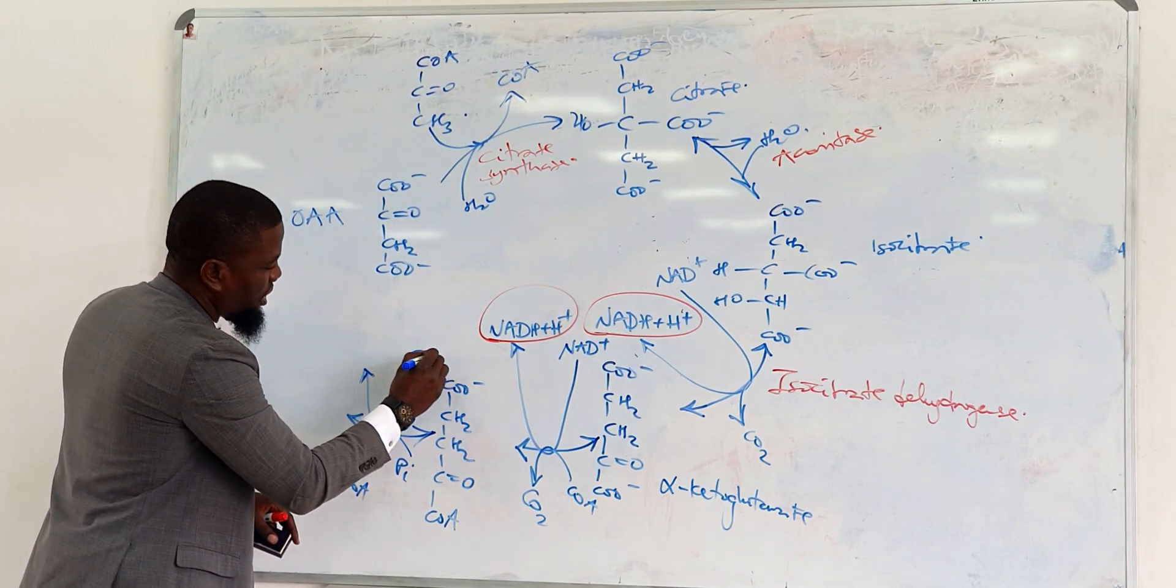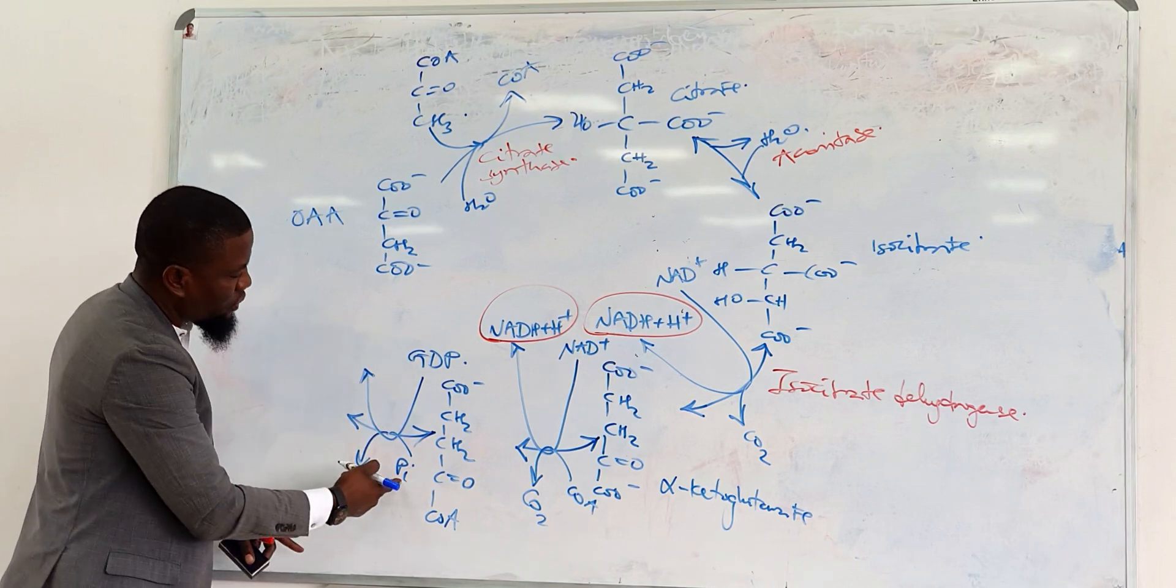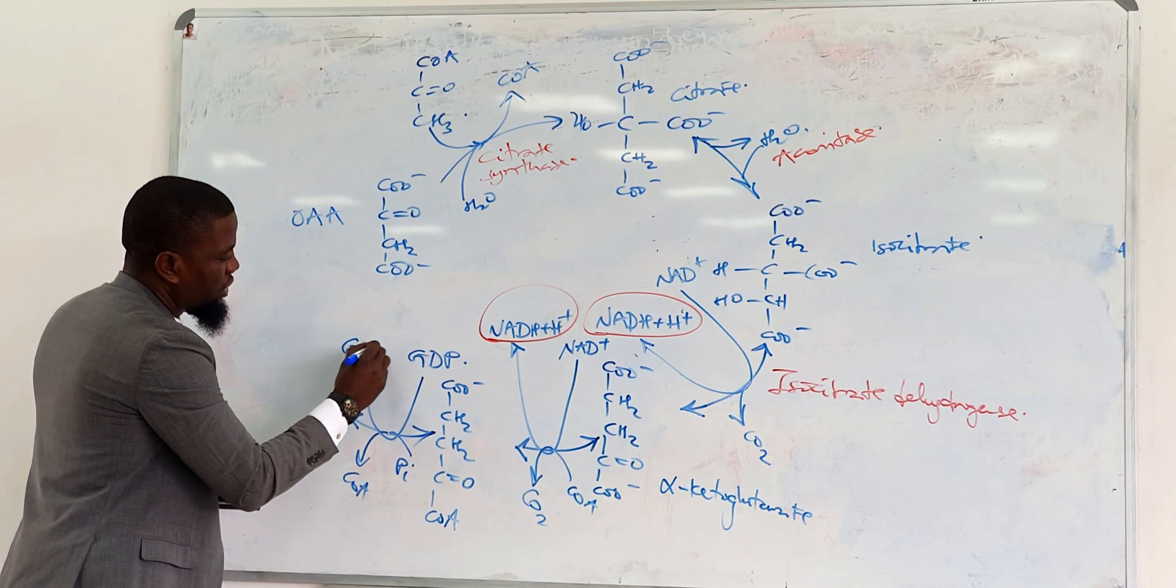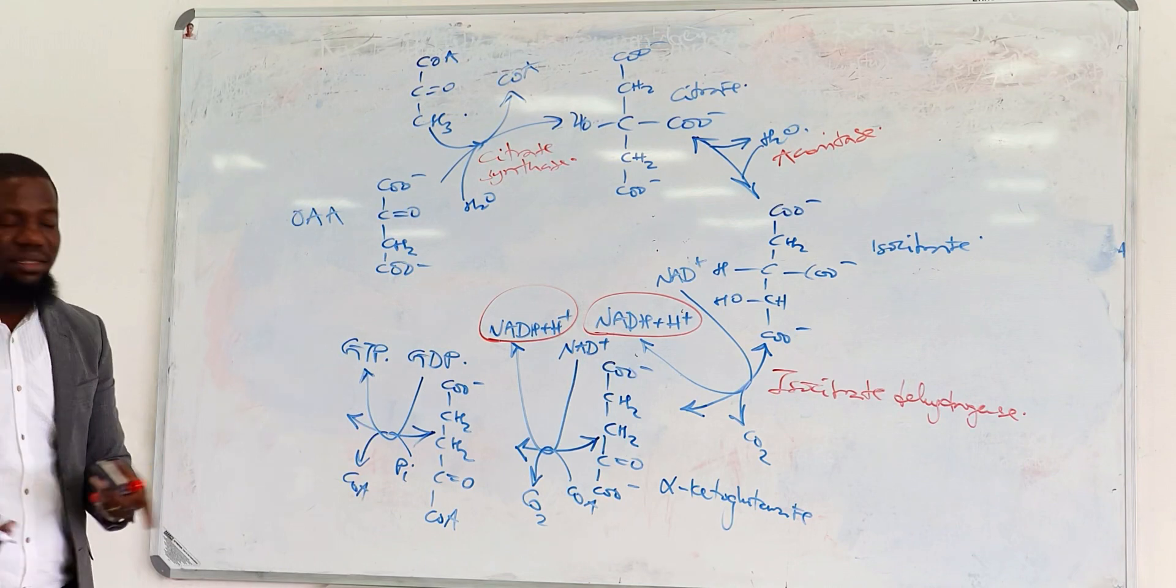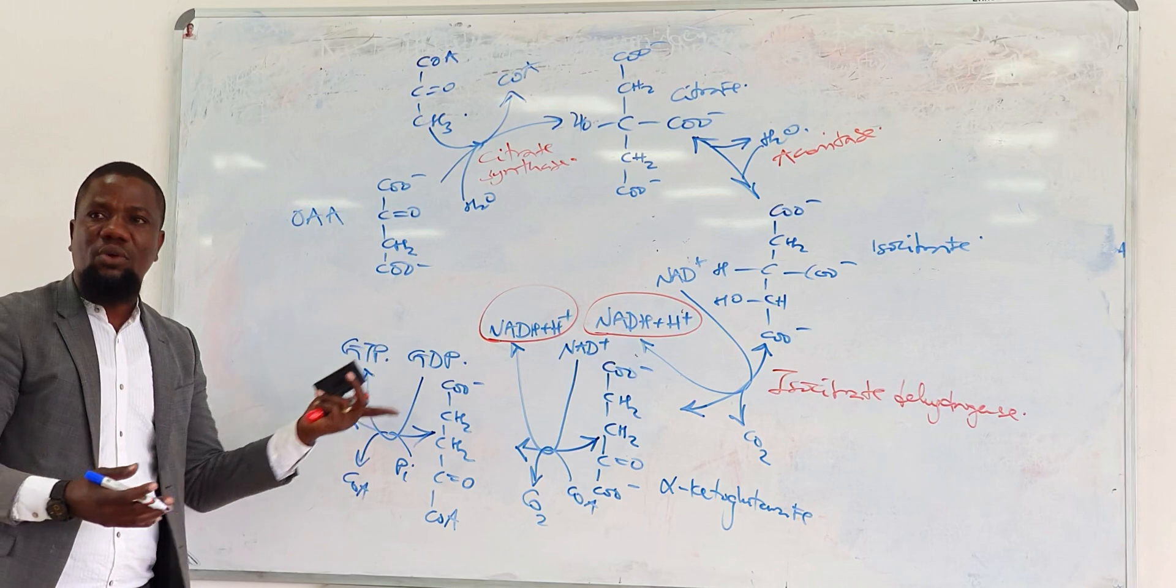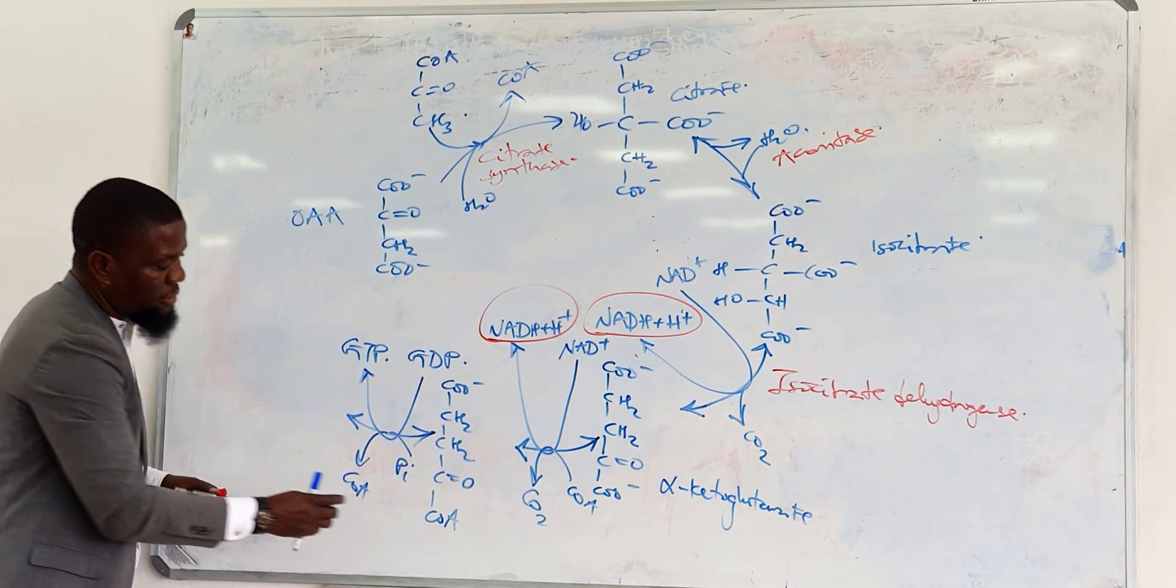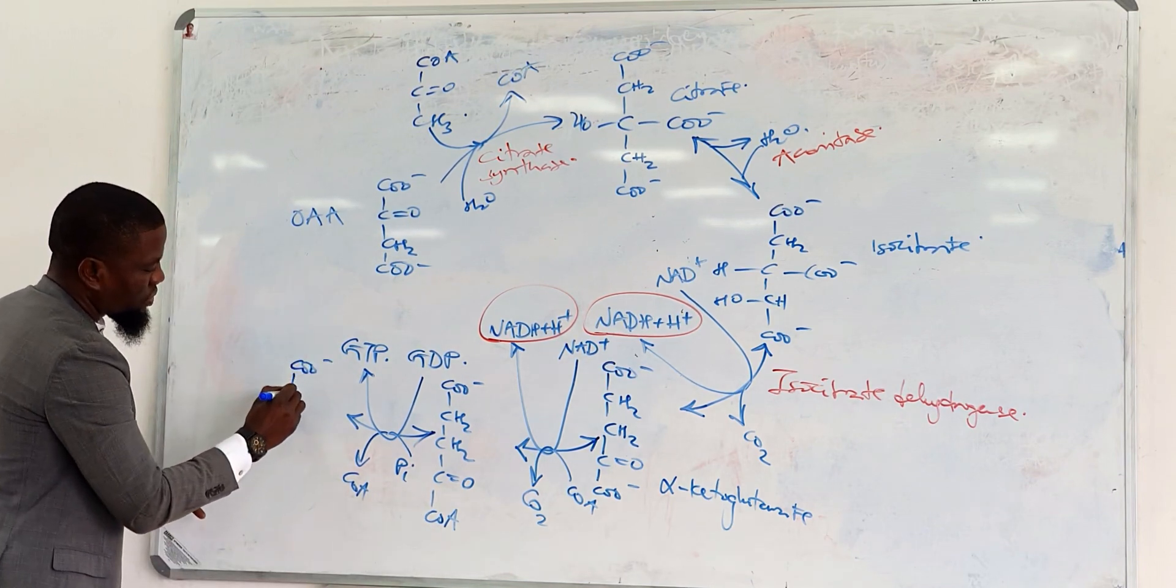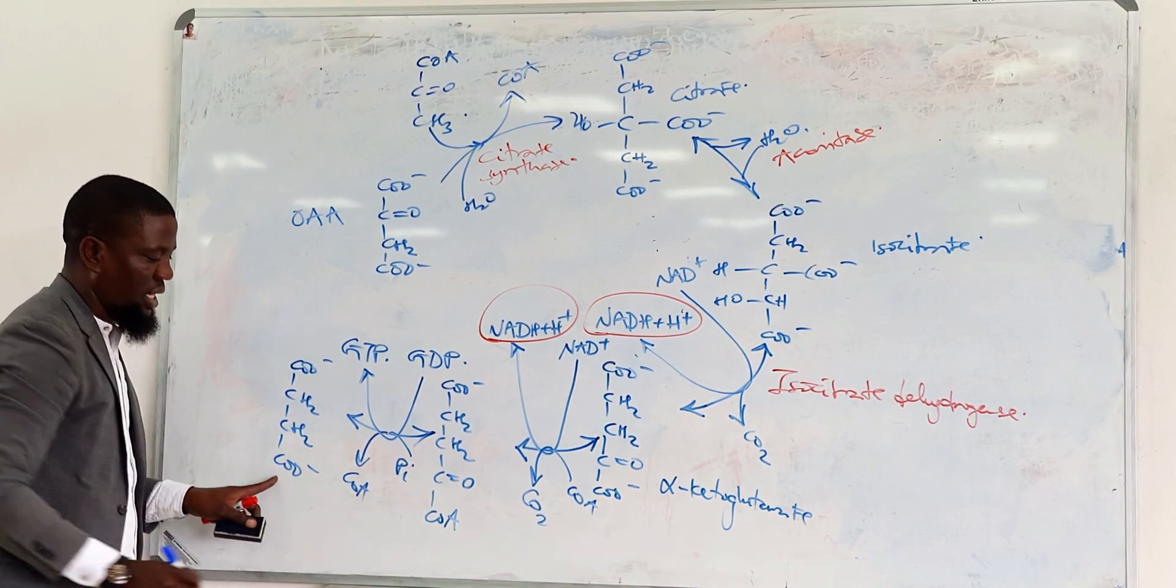The product is going to be succinate, but in the process, this phosphate will be allowed to attach to GTP. I will produce GTP. GTP has equal energy as ATP, basically. So, this GTP would be counted just as much as ATP because this can be used to produce ATP.